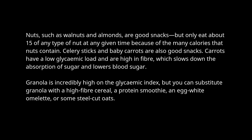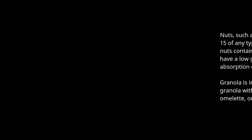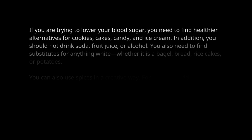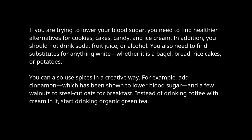Granola is incredibly high on the glycemic index, but you can substitute it with a high-fiber cereal, a protein smoothie, an egg white omelet, or steel cut oats. If you are trying to lower your blood sugar, you need to find healthier alternatives for cookies, cakes, candy, and ice cream. In addition, you should not drink soda, fruit juice, or alcohol. You also need to find substitutes for anything white, whether it is a bagel, bread, rice cakes, or potatoes.